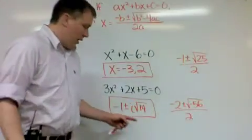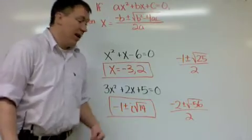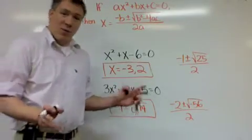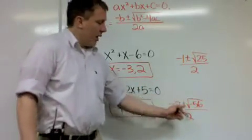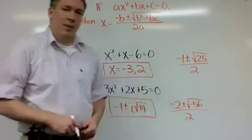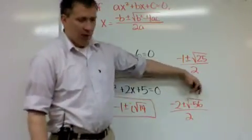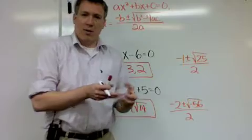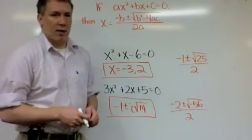So hopefully you got negative 1 plus or minus i root 14 as your answer. Now if you didn't, I wouldn't worry about it too much. You may have gotten negative 2 plus or minus i root 56 over 2 or something like that and haven't pulled out the square root of 4 out of here. If you don't remember how to simplify square roots, go ahead and ask in class. We'll go over that then.